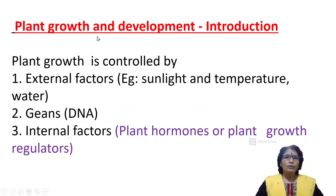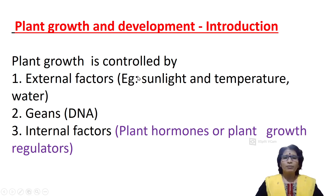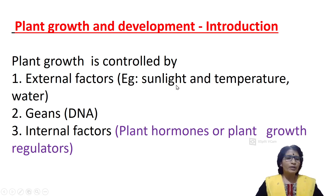The introduction of plant growth and development. Usually plant growth is controlled by external factors, genes and internal factors. External factors include sunlight, temperature and water. Depending on the type of plant, they may require more or less sunlight, temperature and water. Genes also affect plant growth and development.